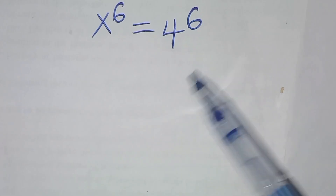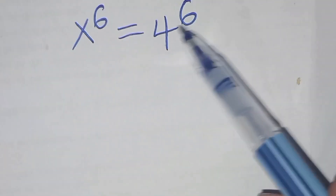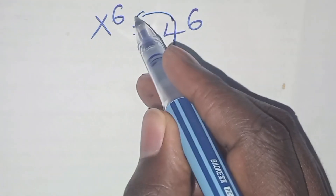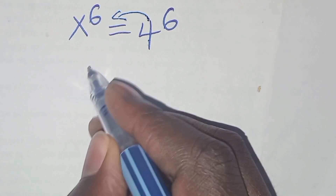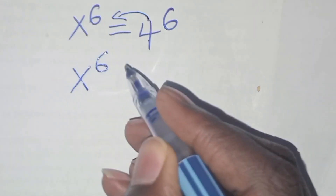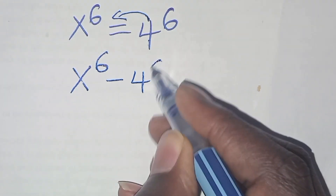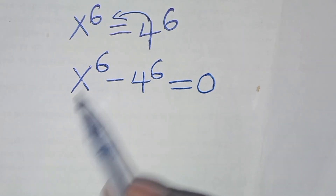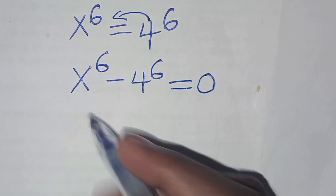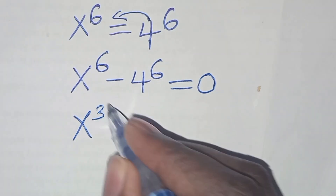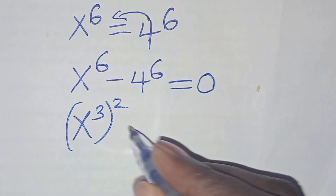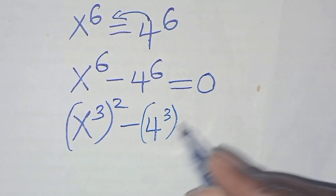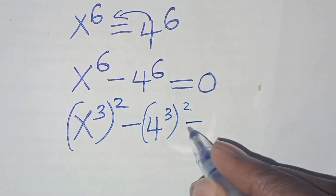Let's solve this exponential equation: x to the power 6 equals 4 to the power 6. The first step is to take 4 to the power 6 to the left-hand side, so we have x to the power 6 minus 4 to the power 6 equals 0.